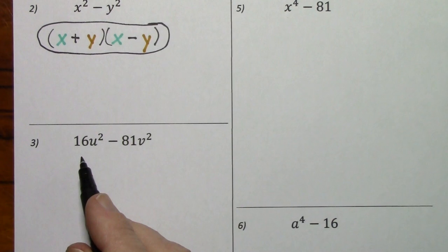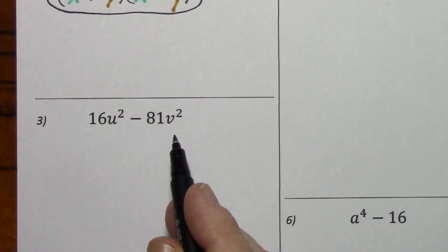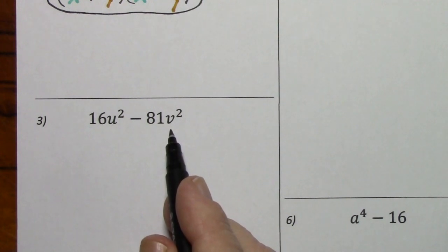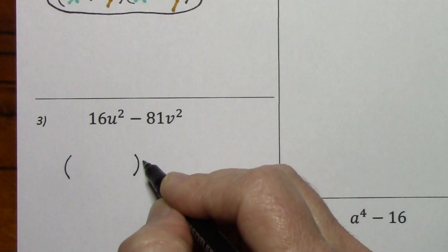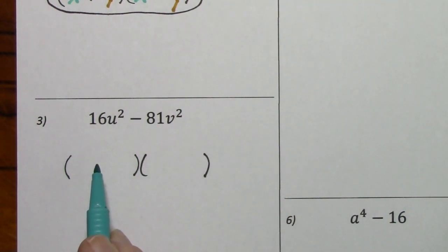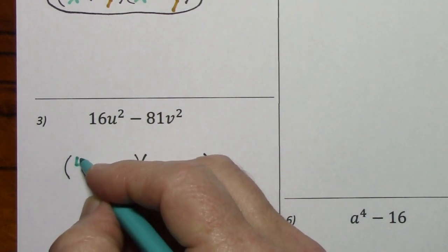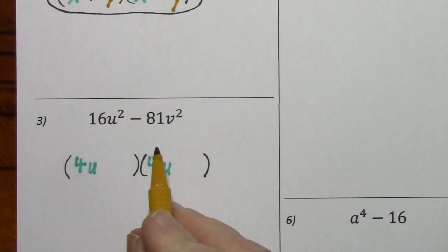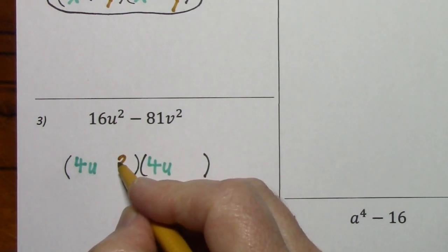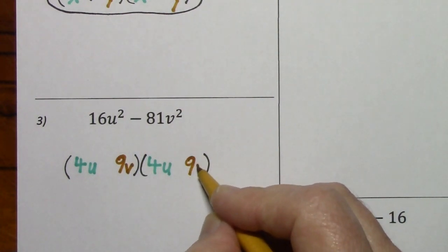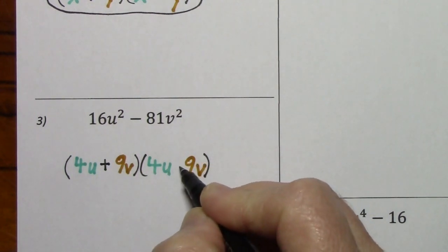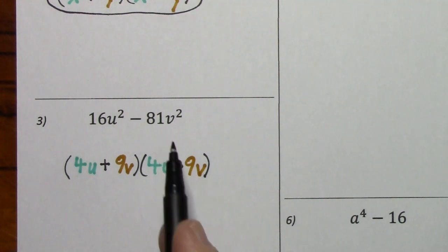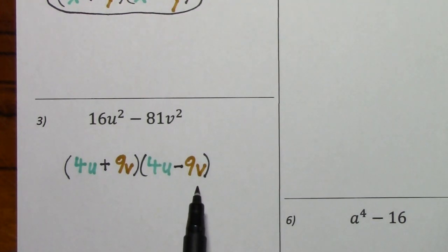Looking at number 3: no GCF other than 1. Do we have two terms? Yes. Is this a difference of perfect squares? Yes. So we can factor by simply writing the factored form. The square root of 16u squared is 4u, so you put that here and here. The square root of 81v squared is 9v, so you put that here and here. Then you simply put one plus and one minus. Here's the factored form of our original polynomial — we could call this a binomial. You should check this to see that it works.